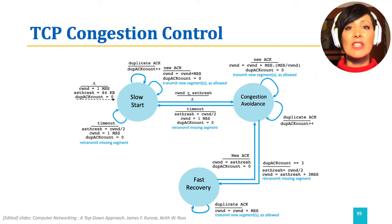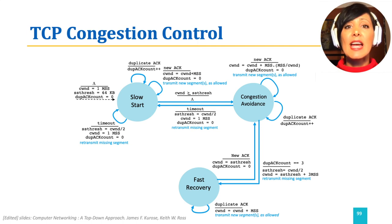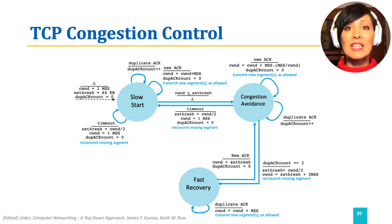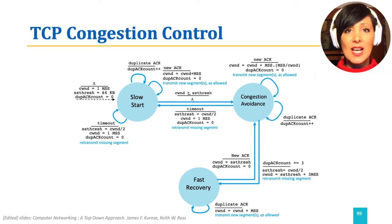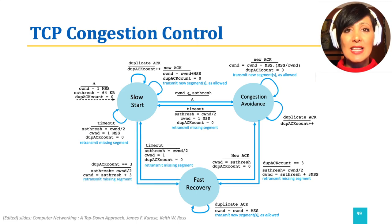During fast recovery state, CWND keeps increasing for incoming duplicate ACKs until it reaches 3. This will indicate another triple duplicate ACK, which would result in setting SS threshold to half of congestion window size, setting the congestion window size to this new SS threshold value plus 3, and going to slow start state.